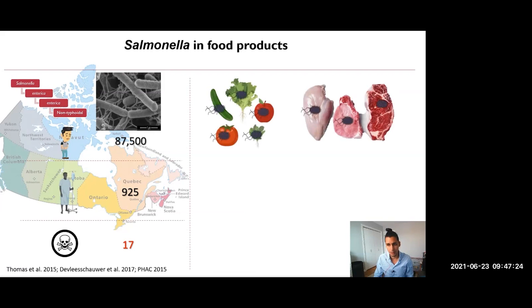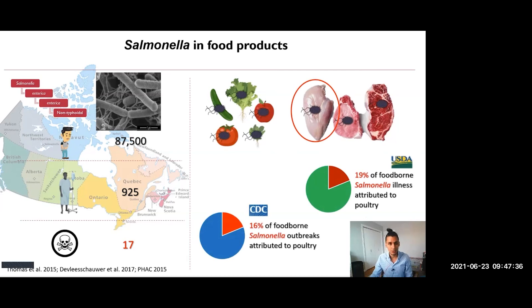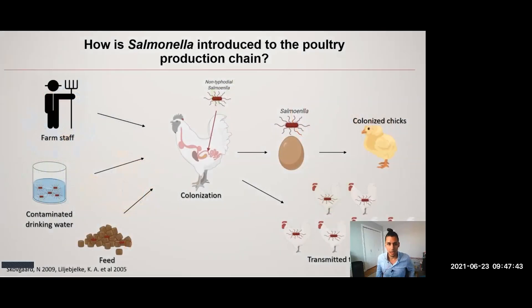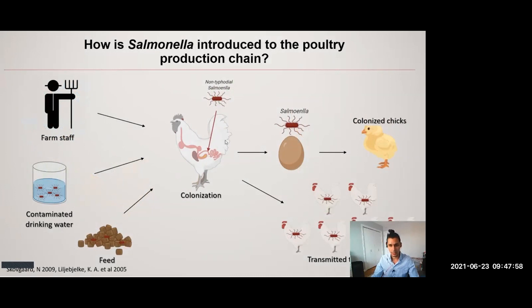This is a foodborne pathogen, and the main vehicle of these infections is the consumption of contaminated food products. Among these products, the one with the highest incidence is poultry. According to the USDA and the CDC, 19% and 16% of illness and outbreaks are attributed to the consumption of contaminated poultry products. This bacteria can be introduced to the production chain very early in farms by different environmental factors, causing what we call an asymptomatic colonization. These colonized birds can easily transmit this to the rest of the flock and become the number one source of contamination later on in production.